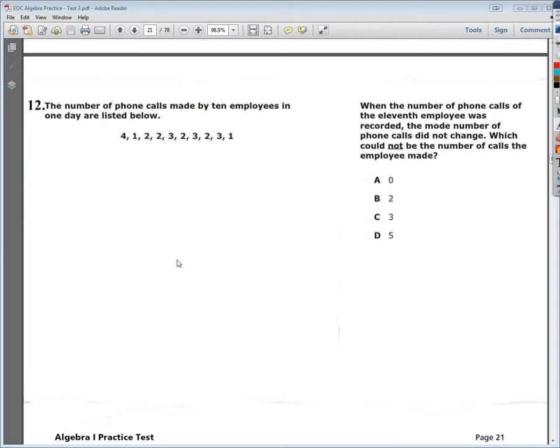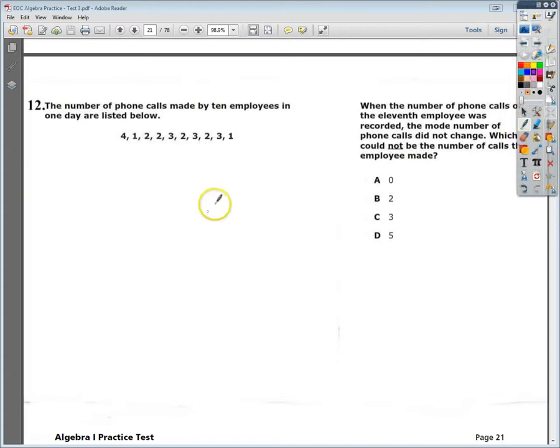Welcome, this is the Algebra 1 EOC practice test number 3, question number 12. The question says: list a number of phone calls made by 10 employees. When the number of phone calls of the 11th employee was recorded, the mode of the phone calls did not change, which could not be the number of calls that they made.